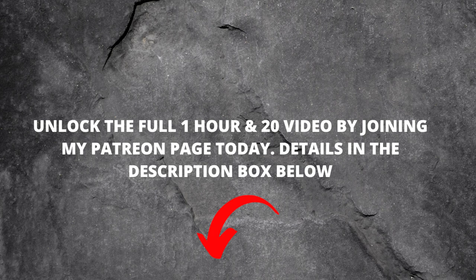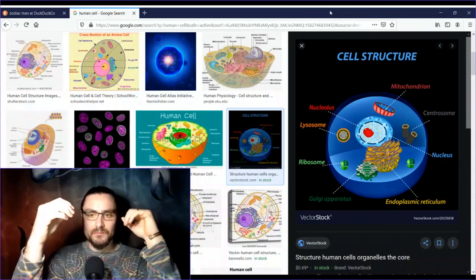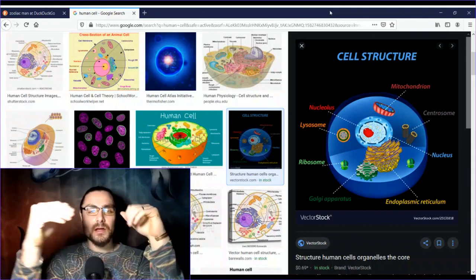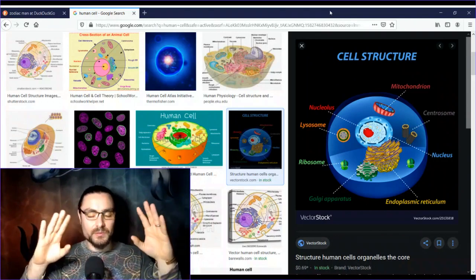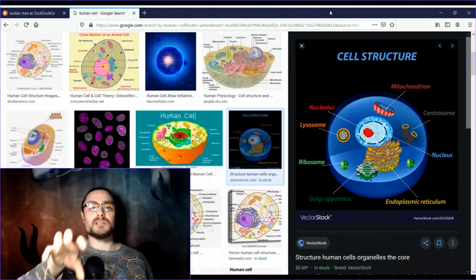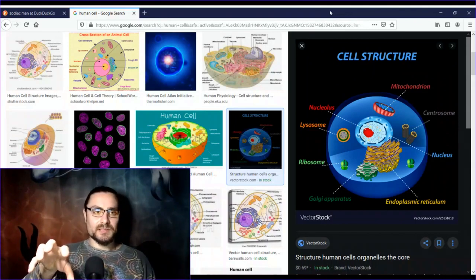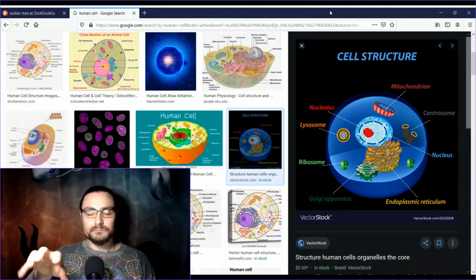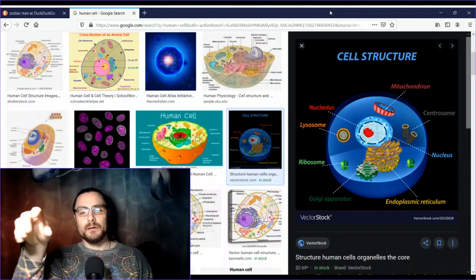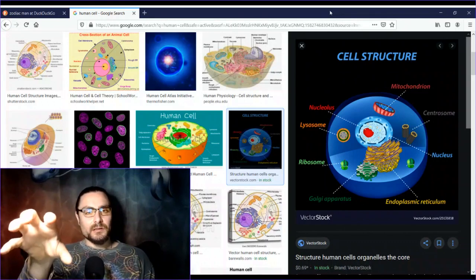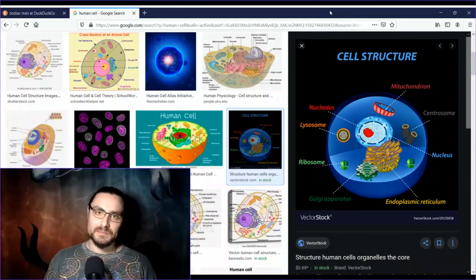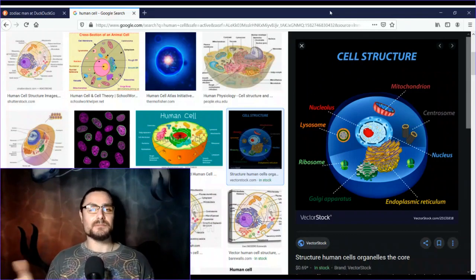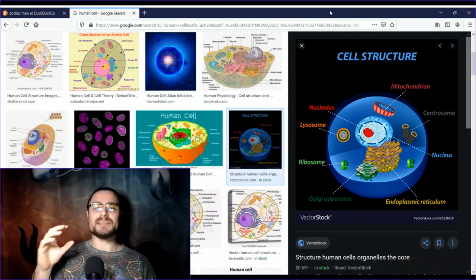It also affects how our organs operate, the velocity and speed of our thoughts. It dictates, based on its position, because it can move, our perception based on where it's located. The assemblage point is a particular part of our energy field that dictates how much of the electromagnetic spectrum we can see and interact with. That would be the easiest, most layman's way of describing it.